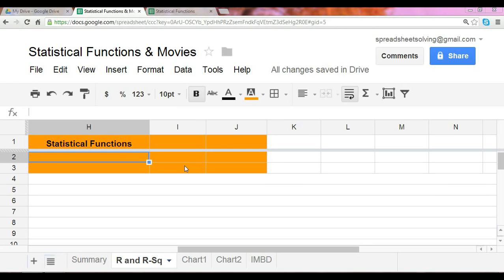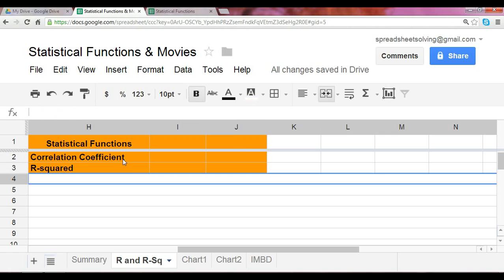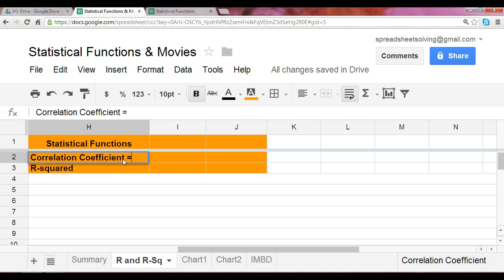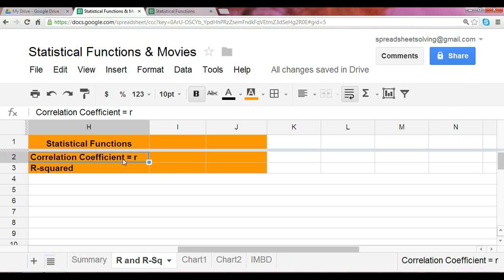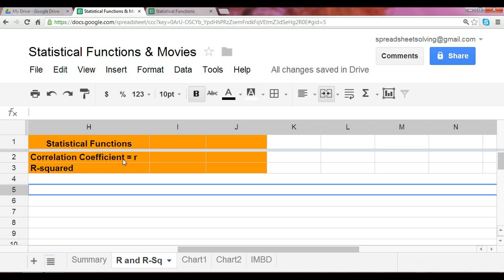Today, we're going to take a look at two statistical functions. We're going to take a look at the correlation coefficient, and we're also going to take a look at the r-squared. Before we delve into an example that uses Google Spreadsheets to calculate the correlation coefficient and the r-squared, let's just take a quick review and learn the concepts.